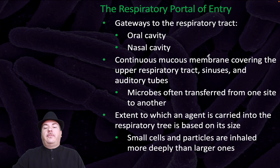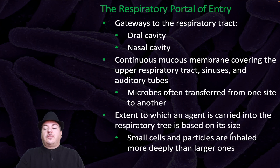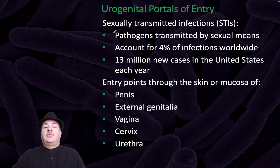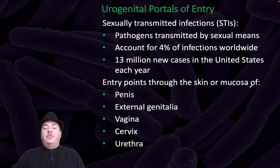The respiratory system is another portal of entry. Gateways include the oral cavity and nasal cavity, with a continuous mucous membrane covering the upper respiratory tract, sinuses, and auditory tubes. Microbes are often transferred from one site to another, and the extent to which an agent is carried into the respiratory tract is based on its size — small cells and particles are inhaled more deeply than larger ones. There are also urogenital portals of entry — the sexually transmitted infections, or STIs — pathogens transmitted by sexual means. They account for 4% of infections worldwide with 13 million new cases in the United States per year, entering through the skin or mucosa of the penis, external genitalia, vagina, cervix, or urethra.